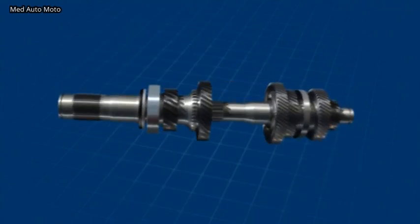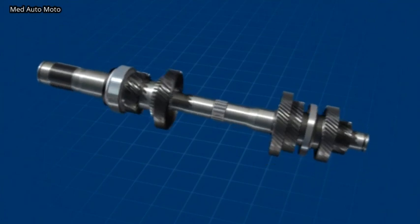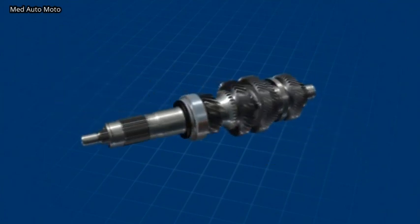The input shafts. Coaxially located, these transfer the torque from the engine into two gearbox sections of the new 7-speed DSG.